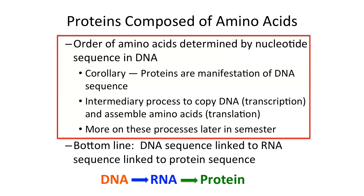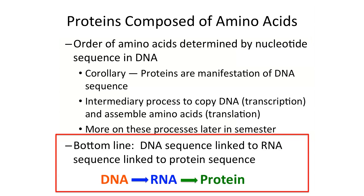If DNA is like a blueprint, proteins are like the structure that the blueprint describes. There is an intermediary process that copies DNA and transcribes it into RNA. On the basis of the sequence in RNA, which corresponds to the sequence in DNA, proteins are assembled into a sequence of amino acids. The bottom line is that DNA sequence is linked to RNA sequence, is linked to protein sequence.